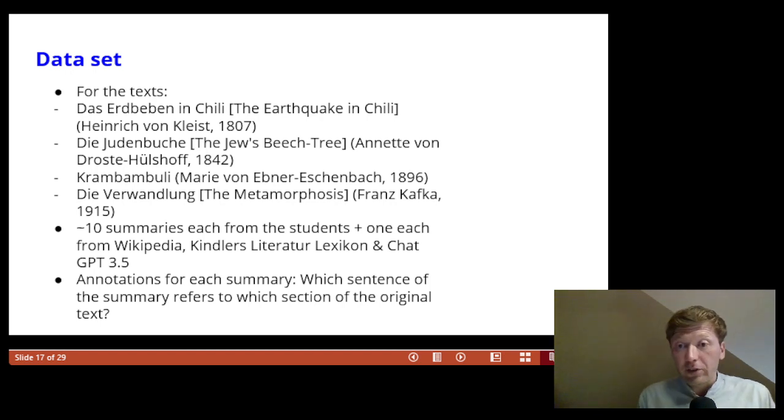The study is based on ten summaries from the students for each work. In addition, one each from Wikipedia and Kindler's Literatur lexicon. For three of the four texts, summaries from ChatGPT were included in our analysis. And the ChatGPT summary of the Droste Hülshoff text contained too many obvious hallucinations, so we did not include it.